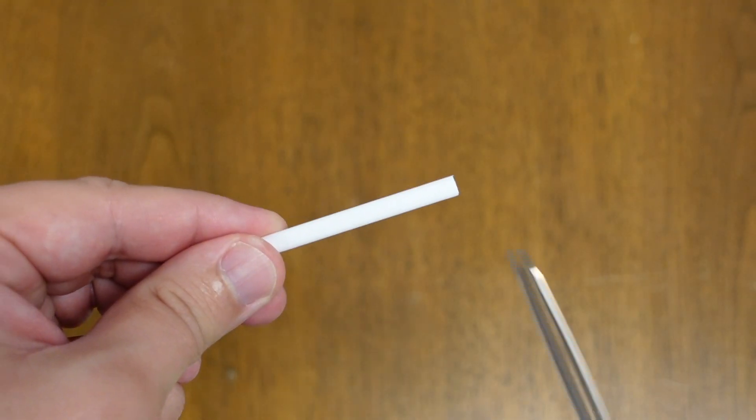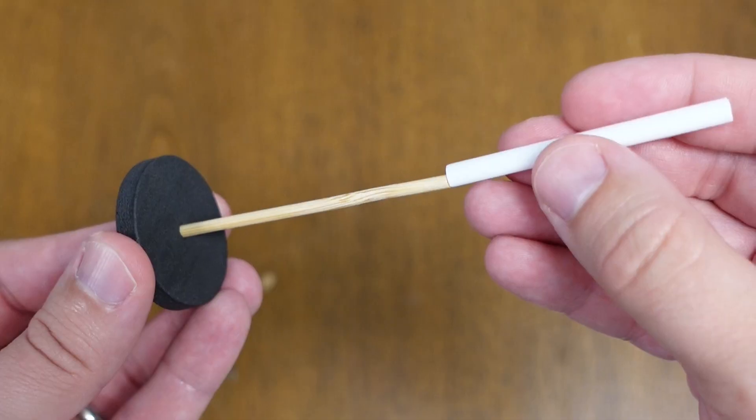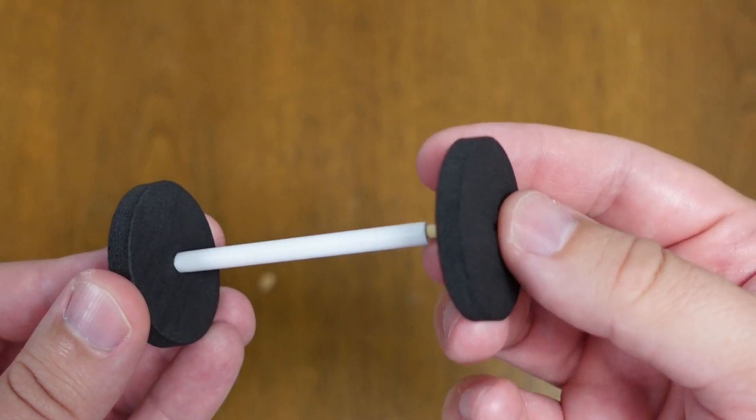Start with one of the smaller straw pieces. Cut a little bit off one end, then assemble your axle by inserting a wooden dowel into the holes in the wheels with the straw between them, like this.